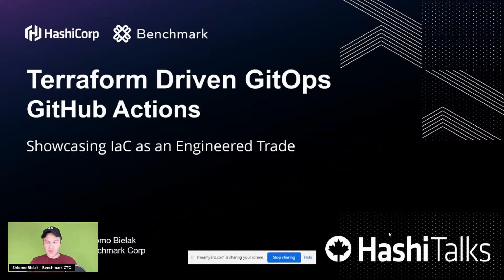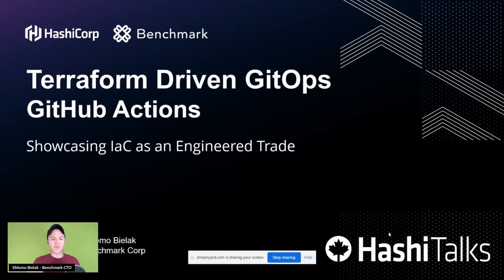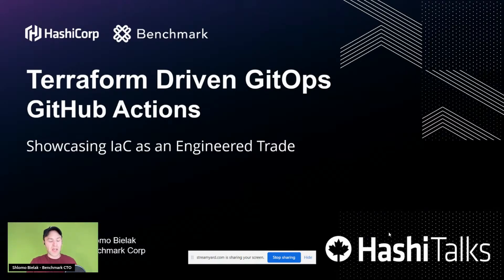So what I'm going to talk about today is — as I watch the other talks, I noticed there's a lot of hands on keyboards, a lot of heroics, a lot of people working things through. And then sometimes things don't work out because humans make errors. So today we're going to talk about what we do with Terraform as a practice, and how things should be driven through a CICD so we can create an engineered trade. Infrastructure as code is an engineered trade, which is not currently in place.